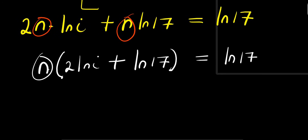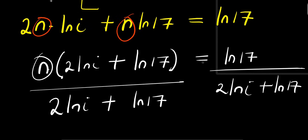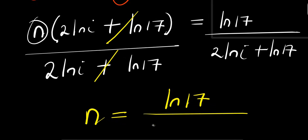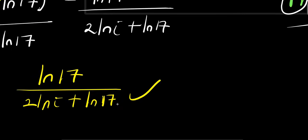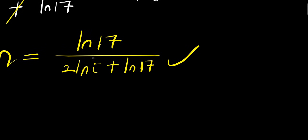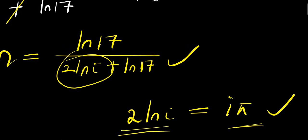So from here I will isolate n by dividing both sides by 2 times ln i plus ln 17. So right now, n equals ln 17 divided by 2 times ln i plus ln 17. This is also our answer. If you observe this solution versus the first one, at this point we have i times pi, while at this point we have 2 times ln i. So we have 2 times ln i equals i times pi — these are the same, so depending on which method you choose to use, you get the same answer.